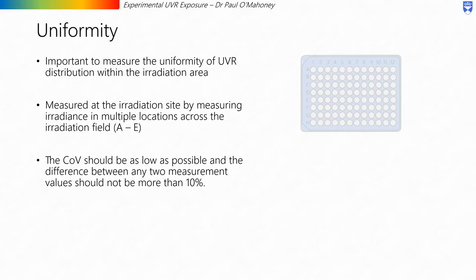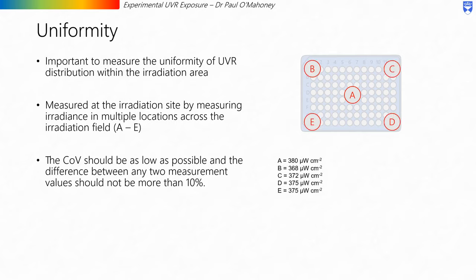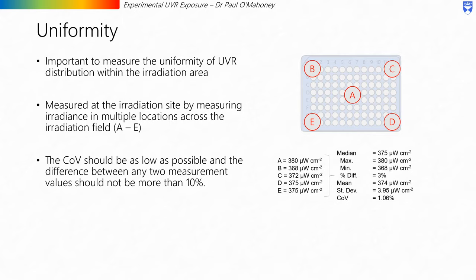Uniformity. It is important to measure the uniformity of UVR distribution within the irradiation area. For example, measuring the irradiance of a light source in the middle of a well plate at point A doesn't give any information about what the rest of the well plate is being exposed to. To measure uniformity, measurements can be taken at the four corners of the well plate. With these five measurements, we can get a variety of descriptive statistics about the UVR distribution. The coefficient of variation, or COV, should be as low as possible and the difference between any two measurement values should not be more than 10%. In this example, the maximum percentage difference is 3% and the coefficient of variation is 1.06%.